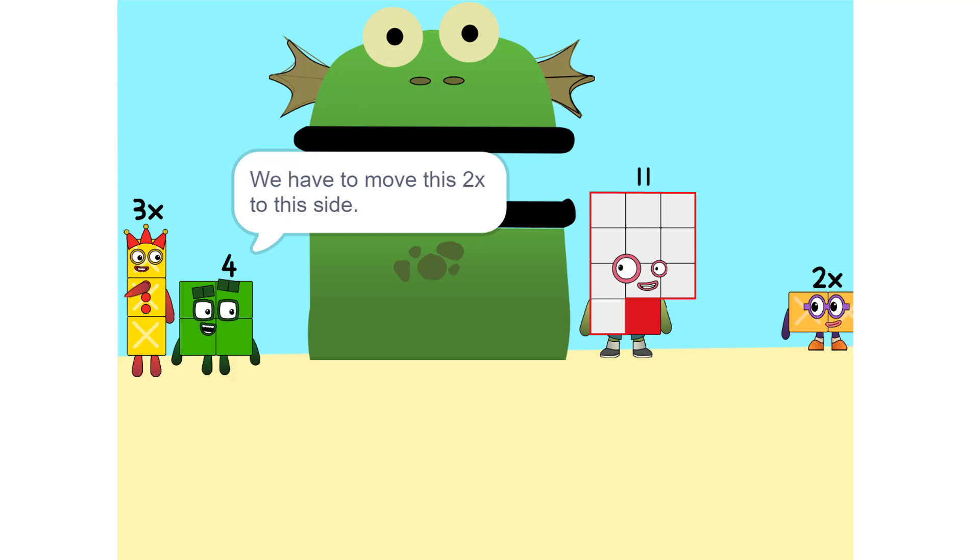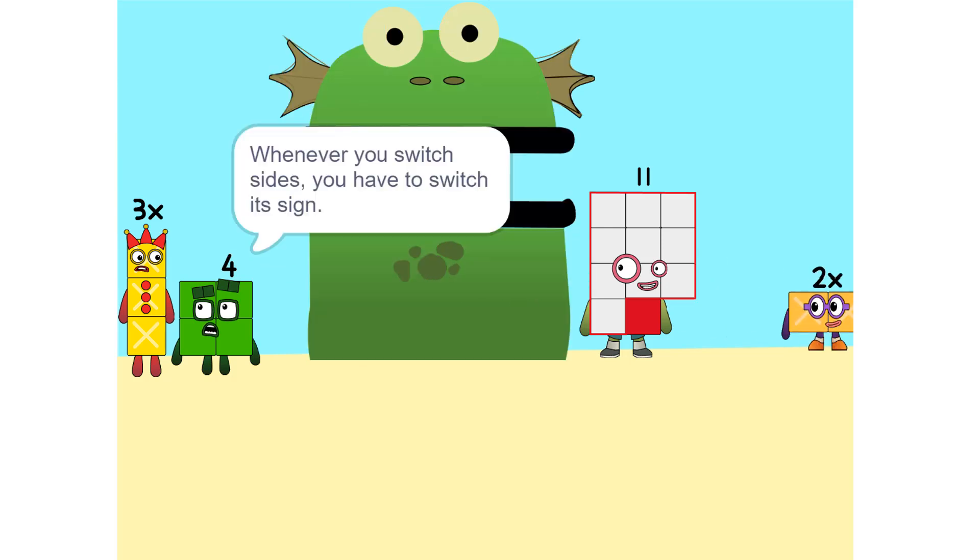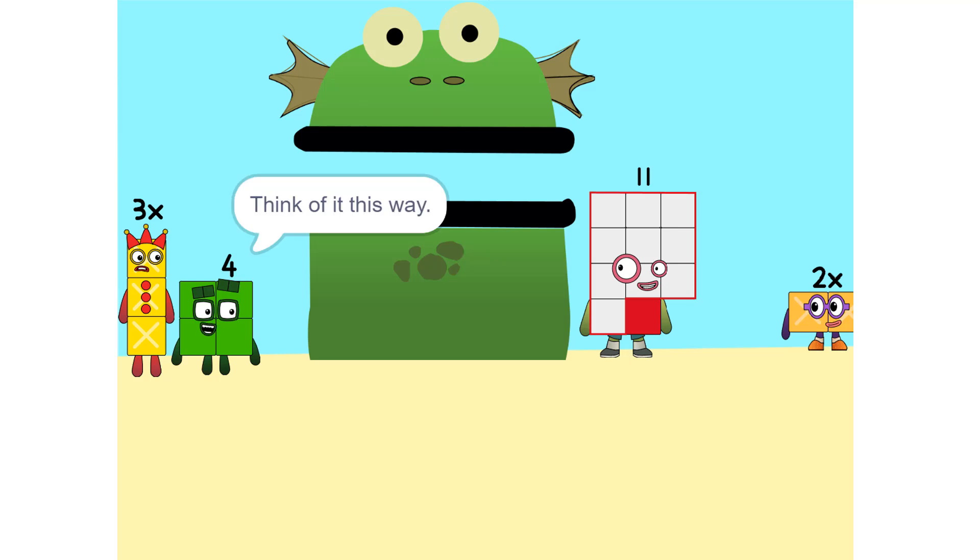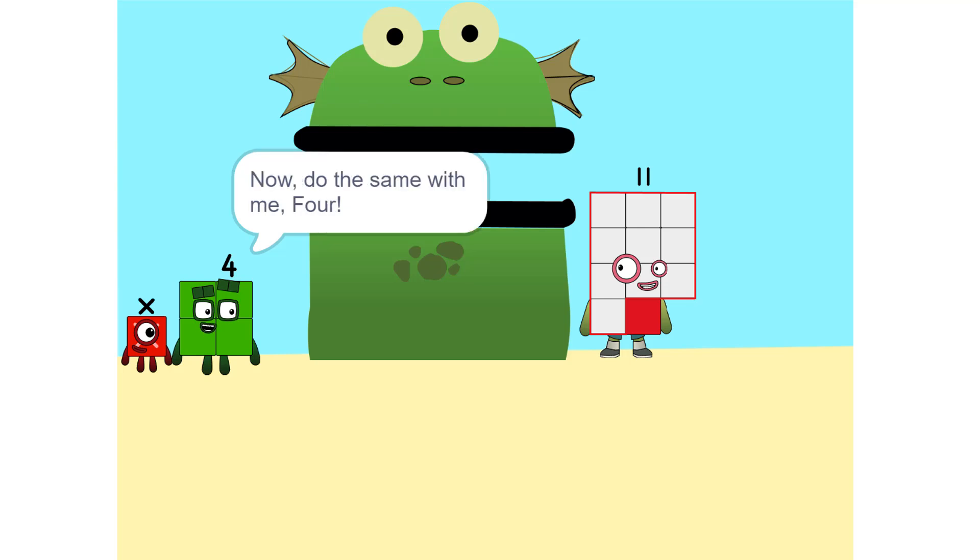We have to move things around. We have to move this 2x to this side. Whenever you switch sides, you have to switch its sign. So if it's positive, it becomes negative and vice versa. Why? Think of it this way. You're subtracting 2x from each side. So, either just do 1x or x. Correct. Now do the same with me. 4.